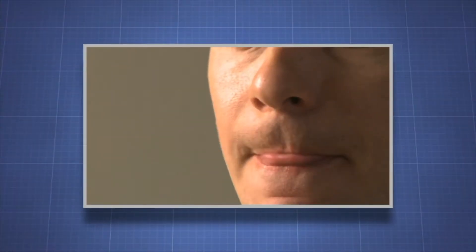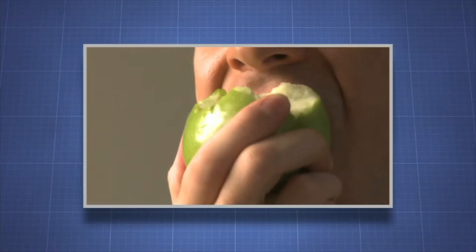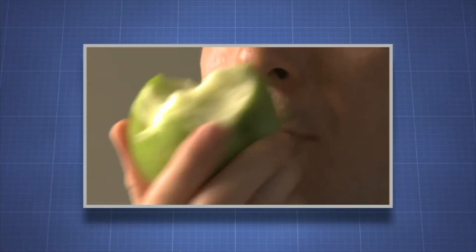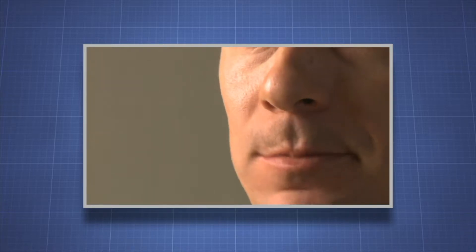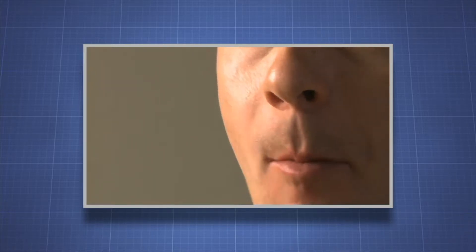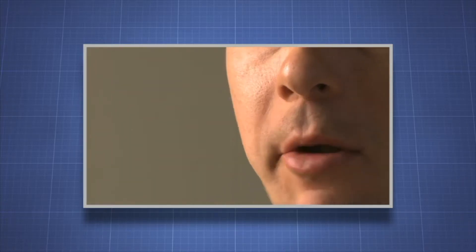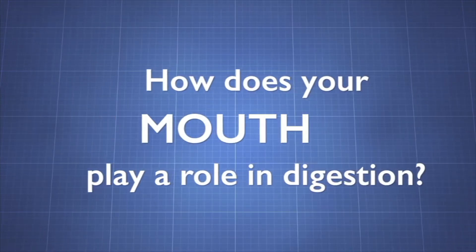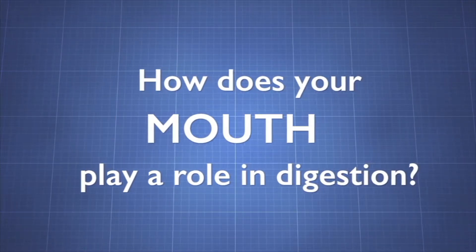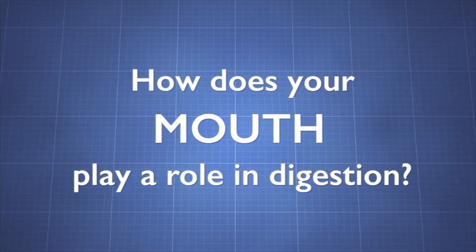When you eat an apple, your mouth engages in a complex series of events. Together, these steps begin digestion, allowing your body to benefit from the food you eat. How does your mouth play a role in digestion?